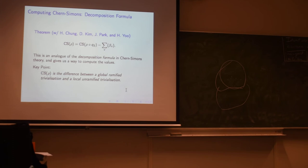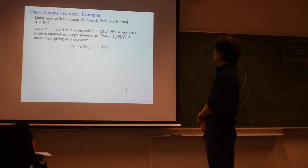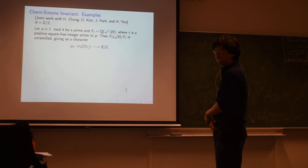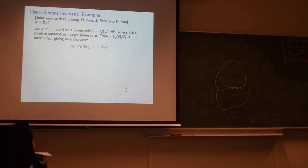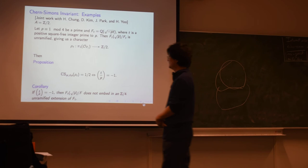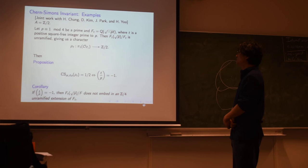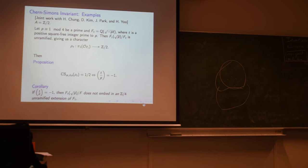As I said, the key point is that this computation is simply the difference between two trivializations, a global ramified line and a local unramified line. And you can use this idea to compute it. So here's an example. I'll say this very quickly. If p is congruent to 1 mod 4, you take the imaginary quadratic field Fₜ, depending on t, a positive square-free integer prime to p. Well then, if you conjoin the square root of p to Fₜ, that ends up being an unramified extension. So that gives us a character of the fundamental group of the ring of integers of Fₜ. So a rather easy, well, not so easy, but elementary, but difficult computation to do. So the trans-Chern-Simons invariant for this canonical cocycle and the cyclic ρ that we discussed earlier, evaluated at ρₜ, is one-half modulo 1 is non-trivial if and only if the Legendre symbol of t and p is minus one.